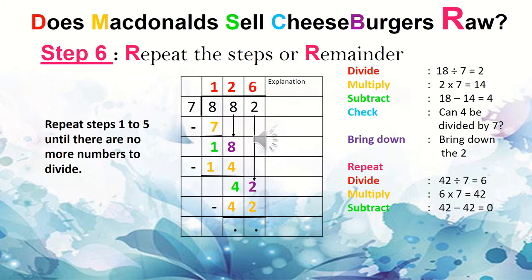Now we finally reach step 6. The R. Does McDonald's Sell CheeseBurgers Raw? Repeat the steps or remainder. So we have divided, we've multiplied, we've subtracted, we've checked and we've brought down. So R stands for repeat. After we bring down, we go back to step 1. And then step 2, step 3, step 4, step 5. And we repeat again. As long as there's numbers in the dividend to bring down, we keep repeating. After we've brought down all our numbers, then whatever is left is called the remainder.